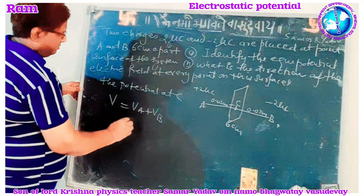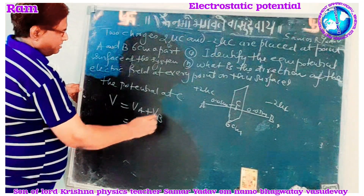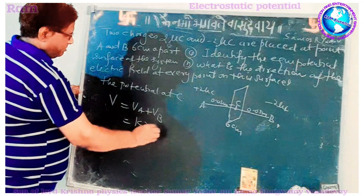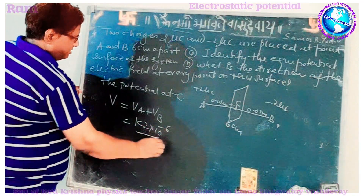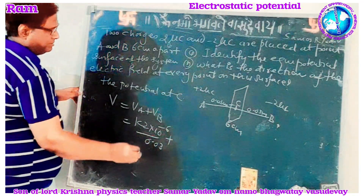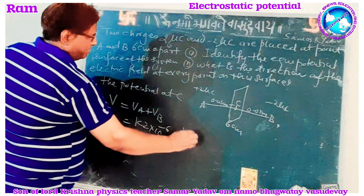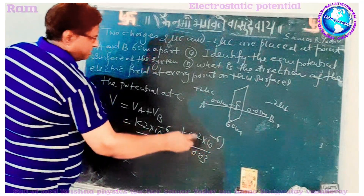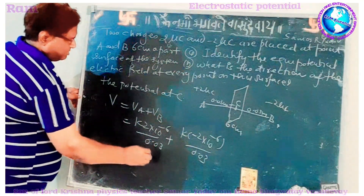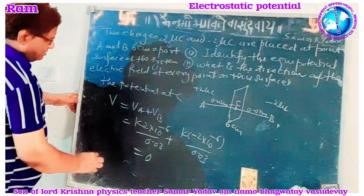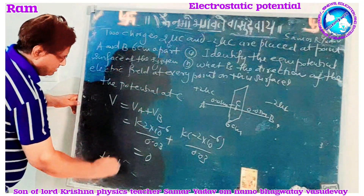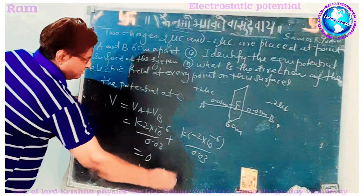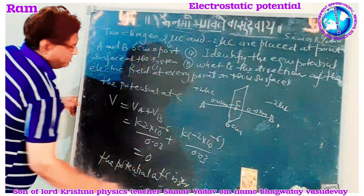The potential at C: V equals V_A plus V_B, which equals k times q_A over r_A plus k times q_B over r_B. That is k times (2 × 10⁻⁶) / 0.03 plus k times (−2 × 10⁻⁶) / 0.03. The positive and negative terms cancel out, giving the potential at C equal to zero.